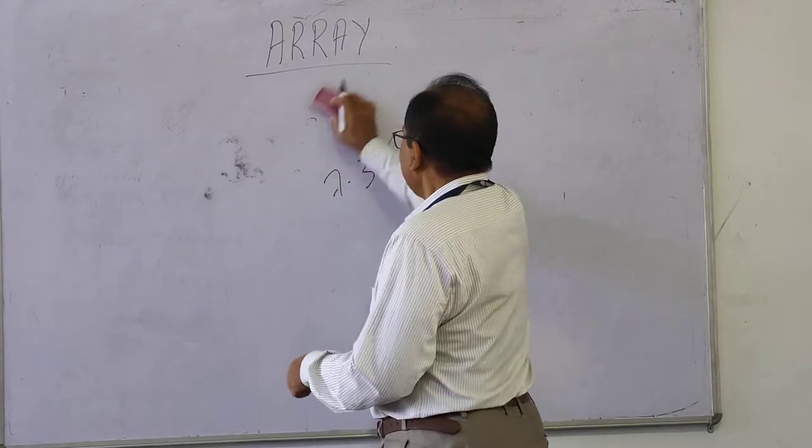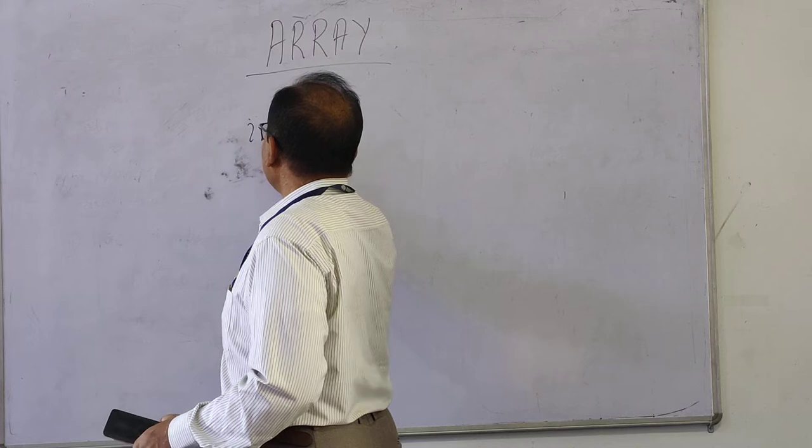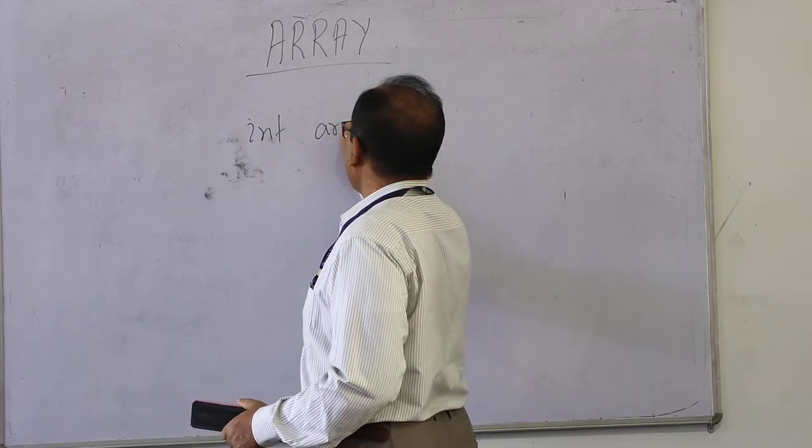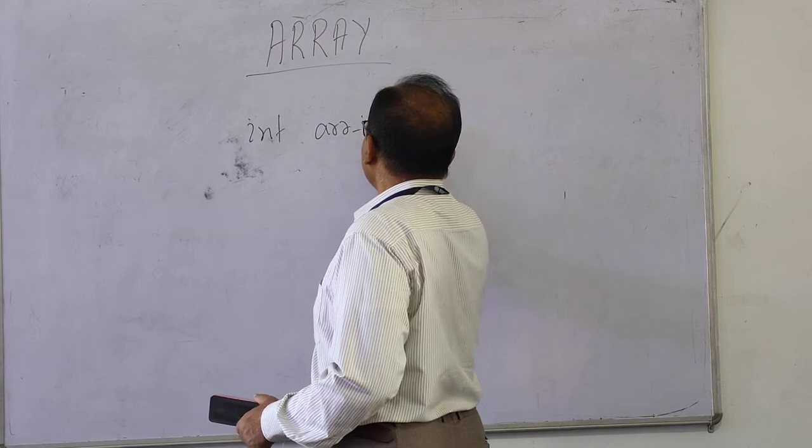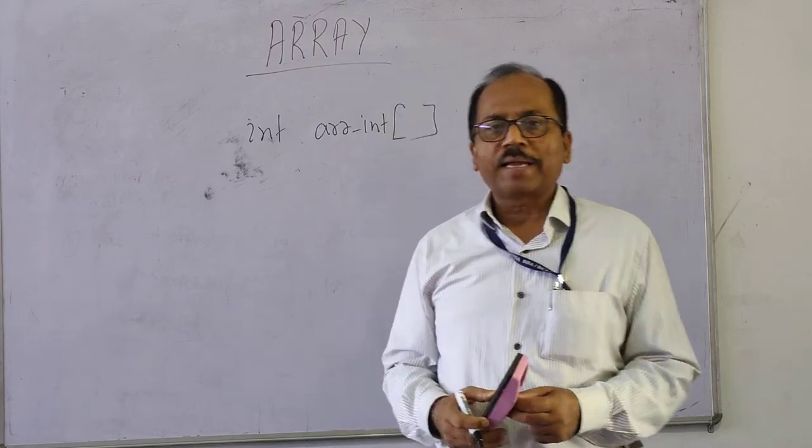If the values are of integer type then we declare it as int, variable name int, array name, a double r, int with a square bracket. That square bracket,